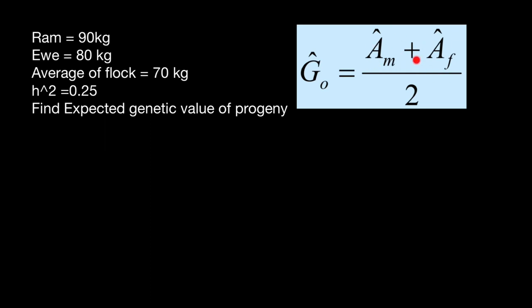So estimated breeding value of male parent, estimated breeding value of female parent. We have to add or sum and divide by two.